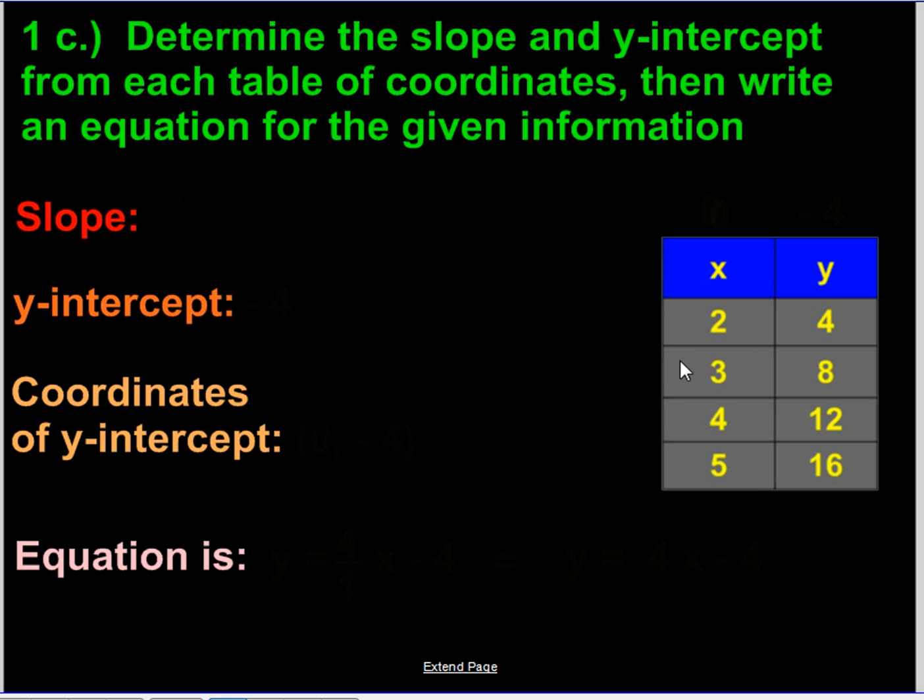So the slope, remember it's y over x. So the change in value of y is by 4 here, so that's going to be our top number. And the change in value of x is by 1, that's going to be our bottom number. So it gives us 4 over 1.